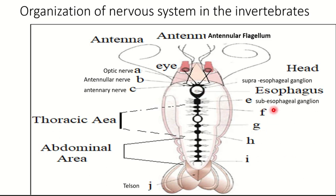In its neck there are two ganglia: one above the esophagus, called the supra-esophageal ganglion, and one below the esophagus, which is the sub-esophageal ganglion. As you can see, this is the esophagus — the one above is the supra-esophageal ganglion and the one below is the sub-esophageal ganglion.